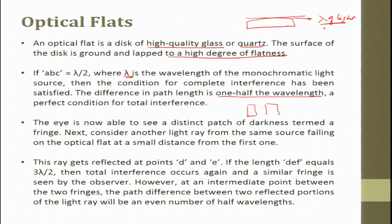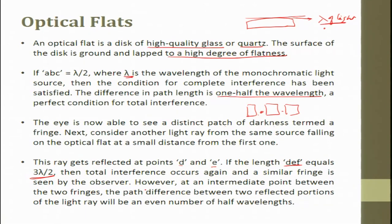You see bright fringe, dark fringe, bright fringe, dark fringe — the eye is able to see distinct patches of darkness termed fringes. Consider another light ray from the same source falling on the optical flat at a small distance from the first one. This ray gets reflected at points D and E; if the length DEF equals 3 lambda by 2, then total interference occurs again and the same fringe is seen by the observer.